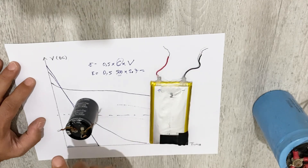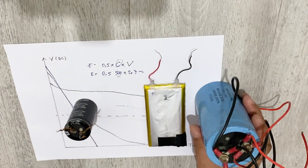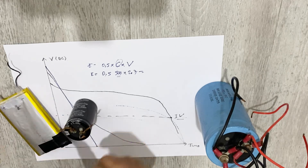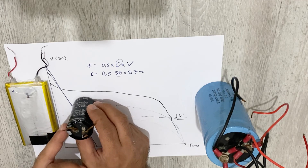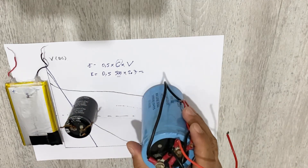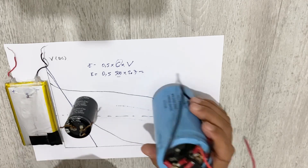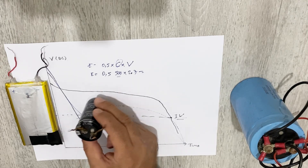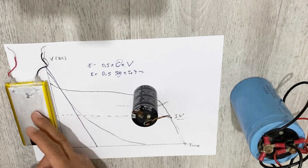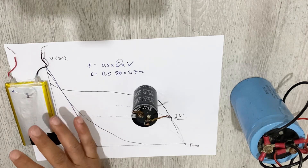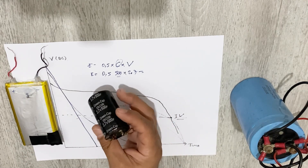The energy stored in batteries is much higher than in super capacitors. Ranking by energy storage: batteries have the most energy, then super capacitors, then electrolytic capacitors. So why do we use super capacitors and electrolytic capacitors? Because of energy density — batteries can only discharge output current of about 3 or 4 amps.